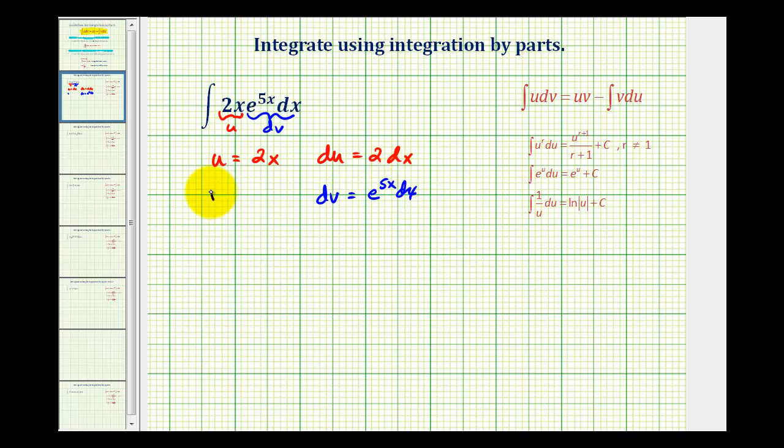Now to determine v we have to integrate. Let's take a closer look at the integral of e to the 5x dx. This would actually require u substitution, where u is equal to 5x, and differential u would be 5dx. Which means dx is equal to 1/5th du.